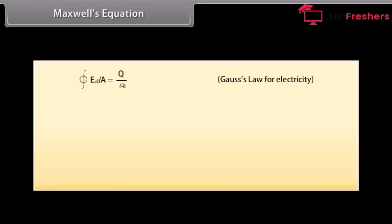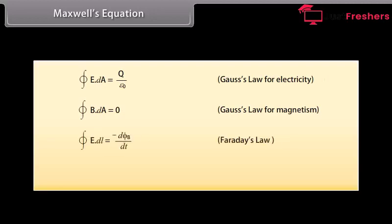Maxwell's equations: The following four equations are the fundamental equations in electromagnetism. Gauss's law for electricity: closed integral of E·dA = Q/ε₀. Gauss's law for magnetism: closed integral of B·dA = 0. Faraday's law: closed integral of E·dL = −dΦ_B/dt. Ampere-Maxwell law: closed integral of B·dL = μ₀I_C + μ₀ε₀ · dΦ_E/dt.